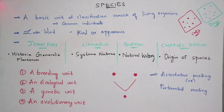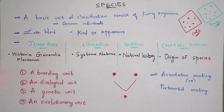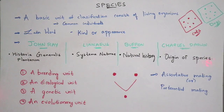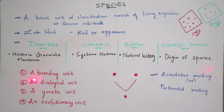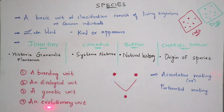Normally this species is considered as a group of individuals because of the following units. There are total 4 types of units: a breeding unit, an ecological unit, a genetic unit, and an evolutionary unit.